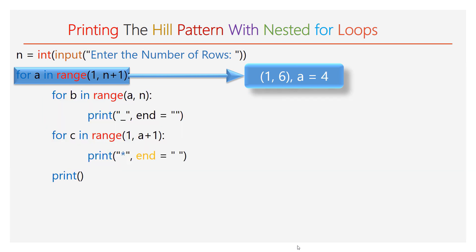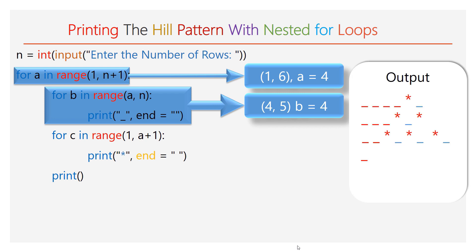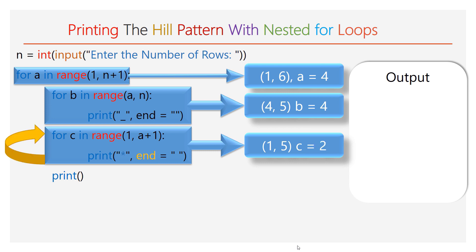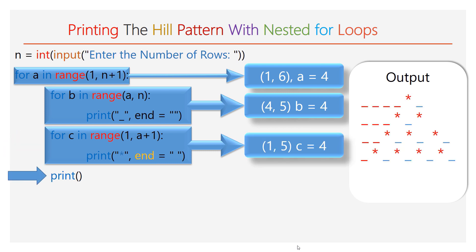The value of a will be 4. The range of b is 4 to 5, so it will iterate only 1 time and one space will be added to the fourth line. The second inner for loop will have range 1 to 5, iterating 4 times. During each iteration, one star along with a space will be printed. The empty print function is executed and the cursor moves to the fifth line.